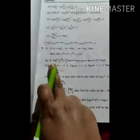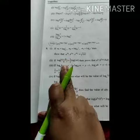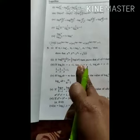If log of (a+b)/4 is equal to 1/2 log(ab), then prove that a² + b² equals 14ab.